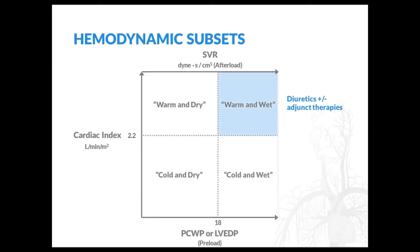For warm and dry patients, therapeutic strategies focus on optimizing their chronic oral therapies such as ACE inhibitors and beta blockers. Subset two — warm and wet patients — present with symptoms of volume overload but their peripheral tissues are well perfused. Initial therapy consists of diuretics, with the addition of vasodilators in those patients refractory to diuretics. Therapies such as ultrafiltration may also be considered in select patients. The management of volume overload in acute heart failure will be covered in detail in another segment.